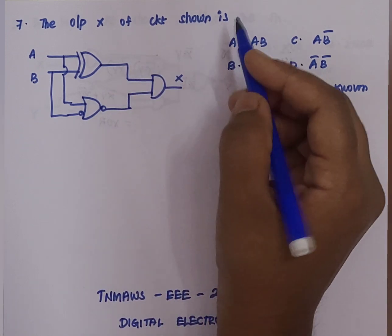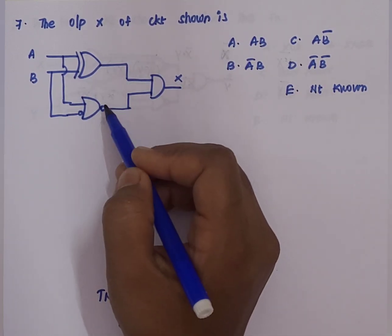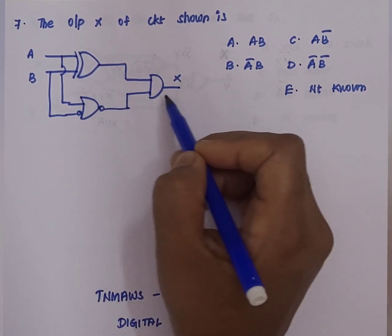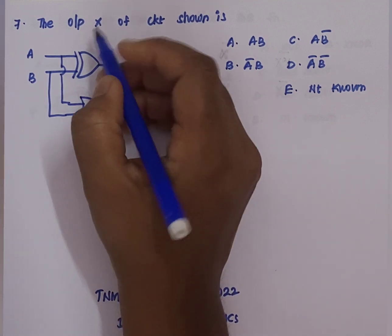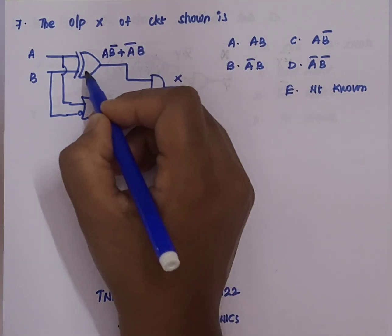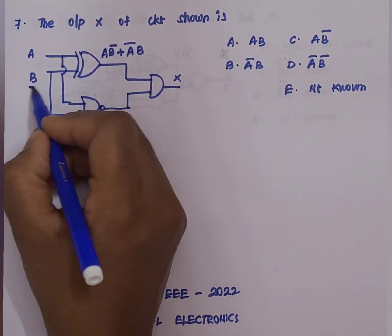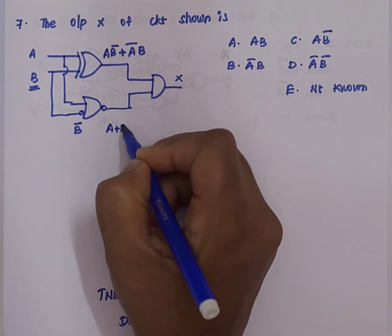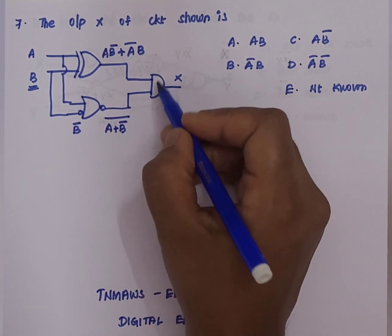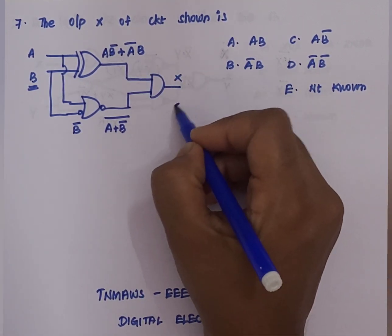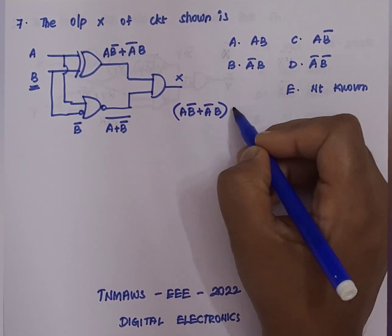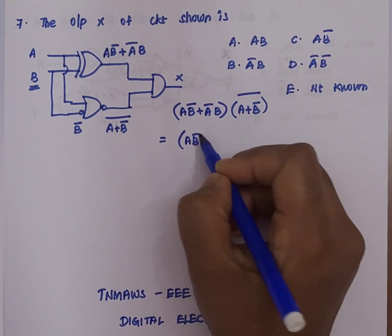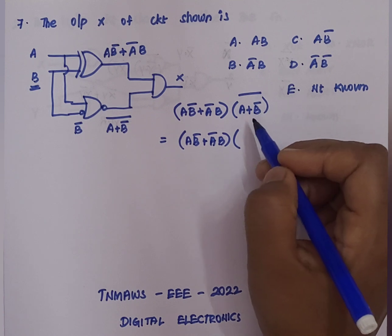Question 7: the output X of the circuit shown is? The circuit has a first stage XOR gate with inputs a and b, giving output ab̄ + āb. Next there is an OR gate with a bubble on the second input and a bubble at the output. The second input has a bubble so it takes b̄ instead of b. Since it is an OR function: a + b̄, and with the output bubble, the whole expression becomes (a + b̄)‾. Both outputs feed into an AND gate.